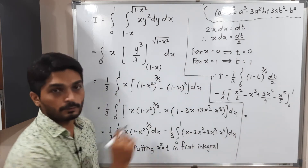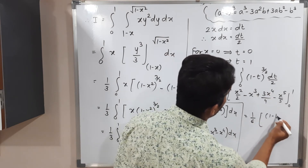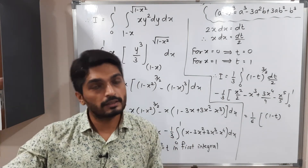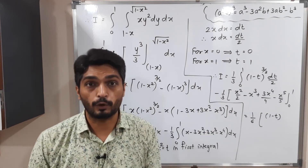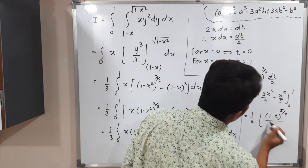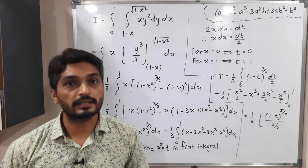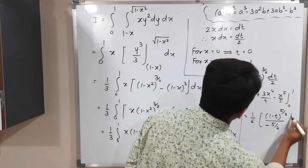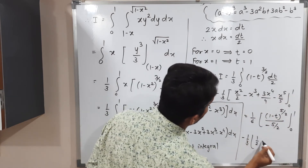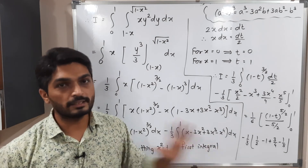Evaluating at the limits: the first part gives minus (1/15) times [(1 minus 1)^(5/2) minus (1 minus 0)^(5/2)] = minus (1/15) times (0 minus 1) = 1/15. For the second integral, putting upper limit 1 gives: 1/2 minus 1 plus 3/4 minus 1/5. Putting lower limit 0 gives all zeros, so no contribution.